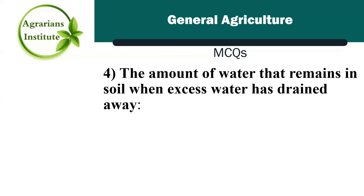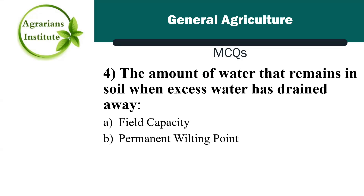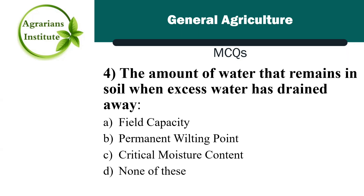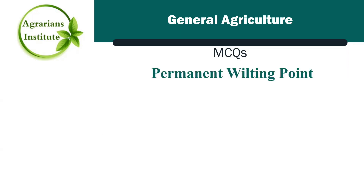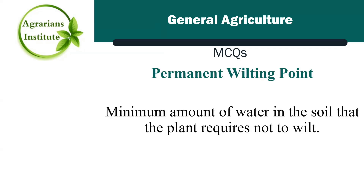Next MCQ: the amount of water that remains in the soil when excess water has drained away — Option A is field capacity, Option B is permanent wilting point, Option C is critical moisture content, and Option D is none of these. The correct answer is A, field capacity. Permanent wilting point is the minimum amount of water in the soil that the plant requires not to wilt.